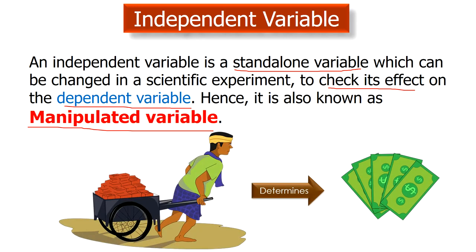Now let's take an example. The amount of wages earned by a labor depends on the hours he has worked. Hence the working hours will determine his pay for the day, so it is the independent variable.